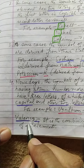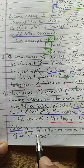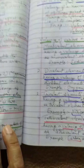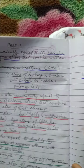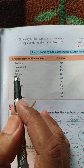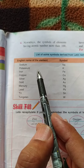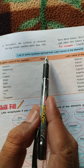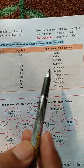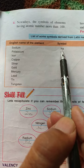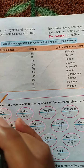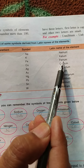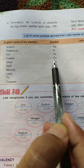Now, valency — if we remember from the last chapter, chapter 4 on atomic structure, it is the combining capacity of an element. Before we go further into valency, let us look at a list of symbols derived from Latin names. Sodium has symbol Na from natrium, potassium has symbol K from kalium, and iron has symbol Fe derived from ferrum.